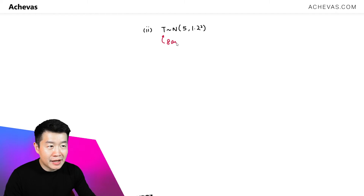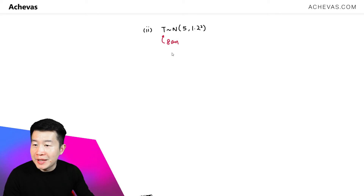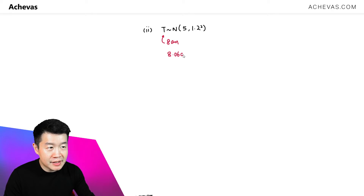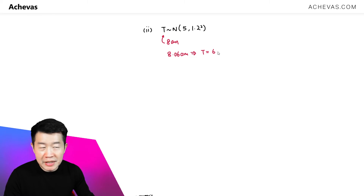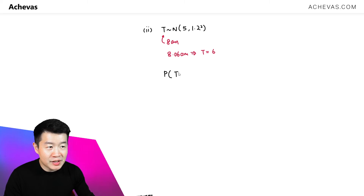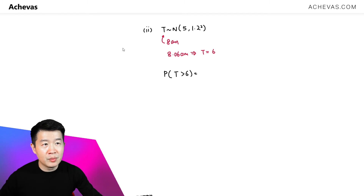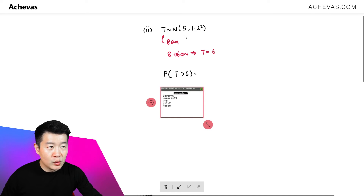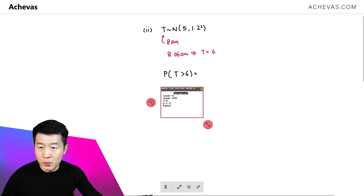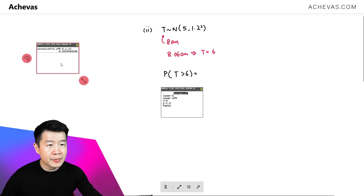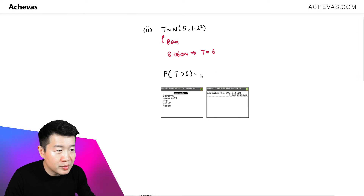T is the number of minutes past 8am. For 8:06am, T is equal to 6 minutes. We are going to calculate the probability that James leaves later than 8:06am, which means P(T > 6). On the graphing calculator, the lower limit is 6, upper limit is positive infinity, mean is 5, and standard deviation is 1.2. The calculator gives a probability of 0.202.